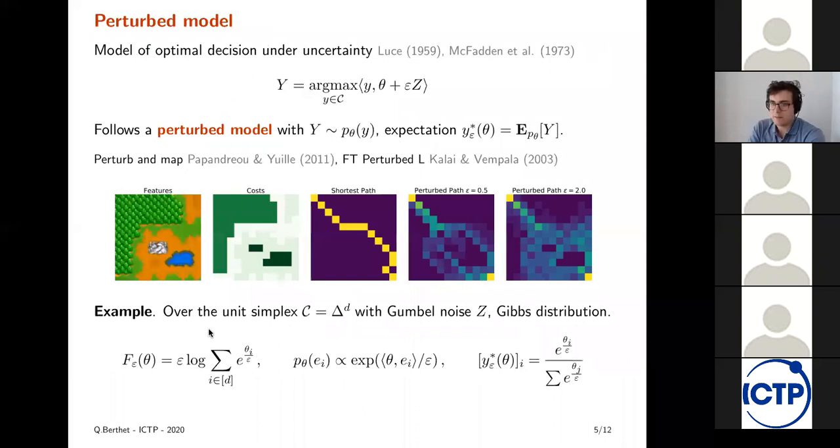So these ideas by themselves are not new. There are models of optimal decision under uncertainty going back to the fifties and seventies in economics, essentially saying that when people act unoptimally, it's just because they don't really know what they're optimizing. So they are indeed making optimal decisions, but under noise. In this case, the decision follows the perturbed model. So a distribution that we call p theta, that is a discrete distribution that was represented by the points in red in the figure before. And the expectation of this distribution is the soft maximum.